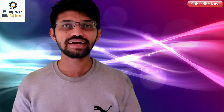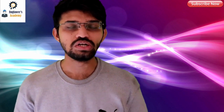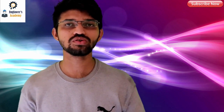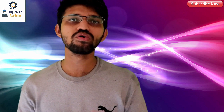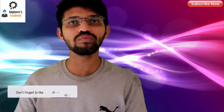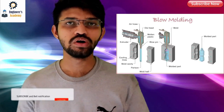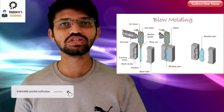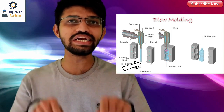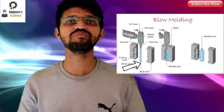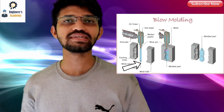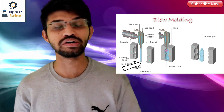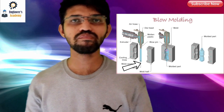Let's understand the manufacturing process of blow molding. First, granules or pellets are heated to form a molten shape, and then that molten plastic is formed into a hollow tube. This particular hollow tube is known as the parison — a very important term in this process.